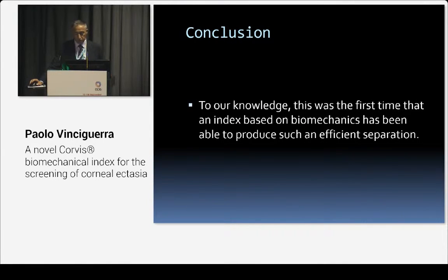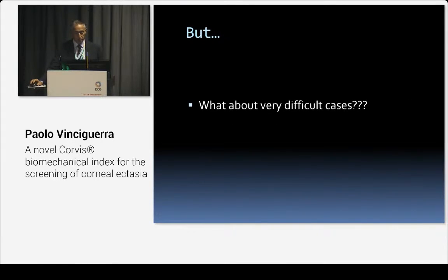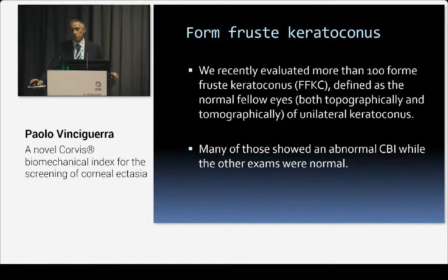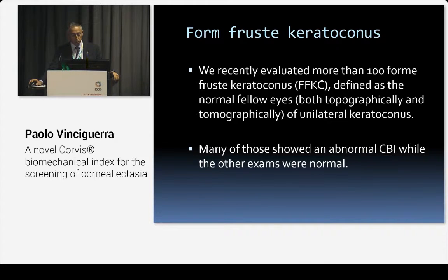In conclusion, to our knowledge this is the first time that an index based on biomechanics has been able to produce such efficient separation in a non-invasive way. But what about very difficult cases — forme fruste keratoconus, or cases where apparently everything is normal? We recently evaluated more than 100 forme fruste keratoconus cases, defined as normal fellow eyes both topographically and tomographically of unilateral keratoconus. Many of those showed an abnormal CBI, while all other examinations were normal.